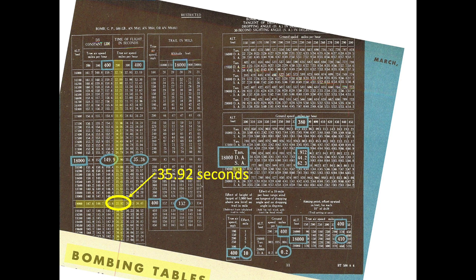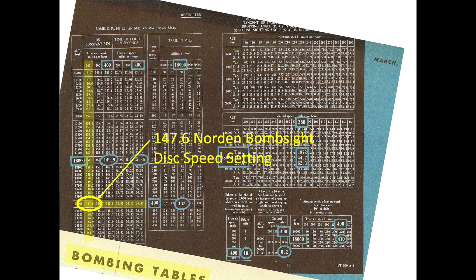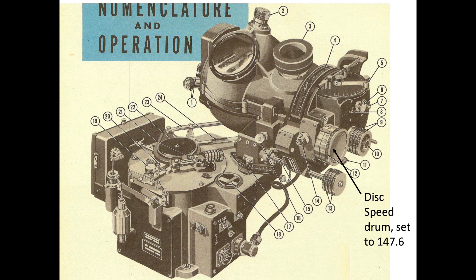This measured duration is only 4.5% slower than if the bomb fell in a vacuum. The Norton bomb site will require the appropriate disk speed based on the bombing altitude and true airspeed. The disk speed is extracted as 147.6. This value will be dialed into the Norton's disk speed drum knob.